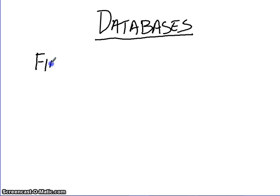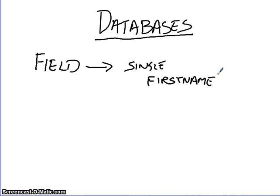The first one is a field. A field will be classed as a single piece of information. So for example, a first name is a single piece of information. When you put more than one field together, more.